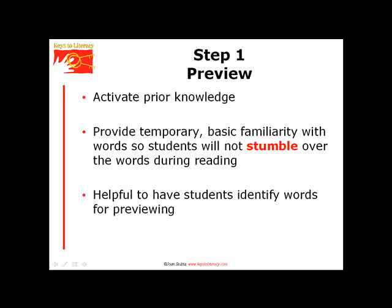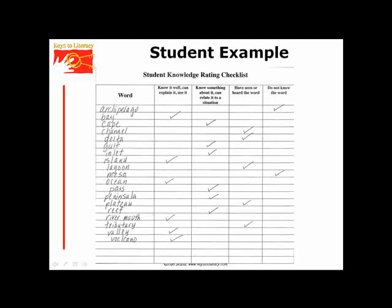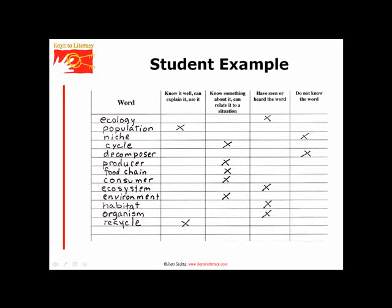One instructional suggestion for previewing is to have students take part in the process for identifying unfamiliar words. A student rating checklist is one way to do this. Here is an example from a social studies class — students rate their knowledge of a word along a scale that ranges from no knowledge to knowing the word well. This example is from a science unit.